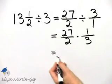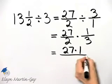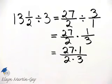How do we multiply fractions? It's numerator times numerator over denominator times denominator.